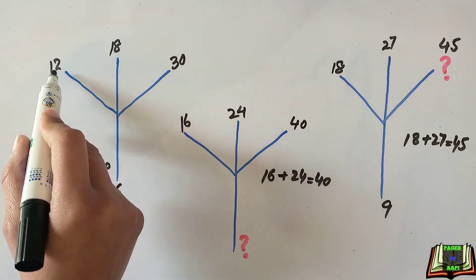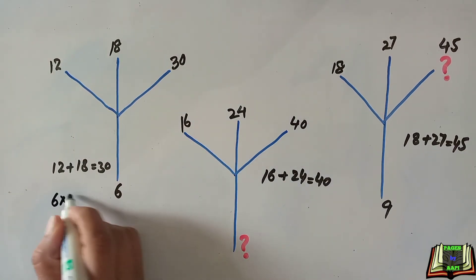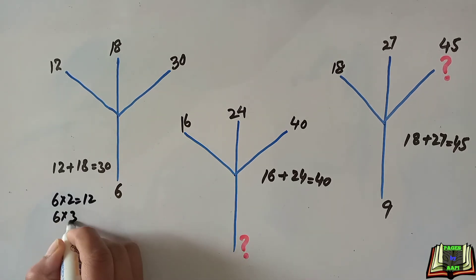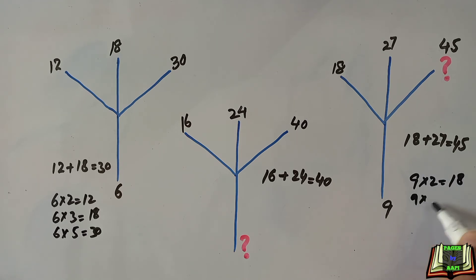Mean, six twos are 12, six threes are 18, and six fives are 30. These three numbers are the multiples of six. In the same way, nine twos are 18, nine threes are 27, and nine fives are 45.